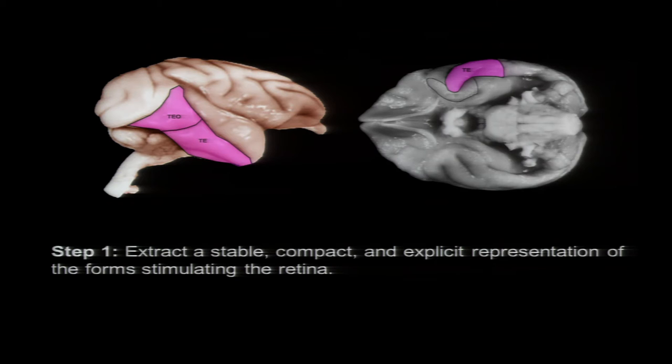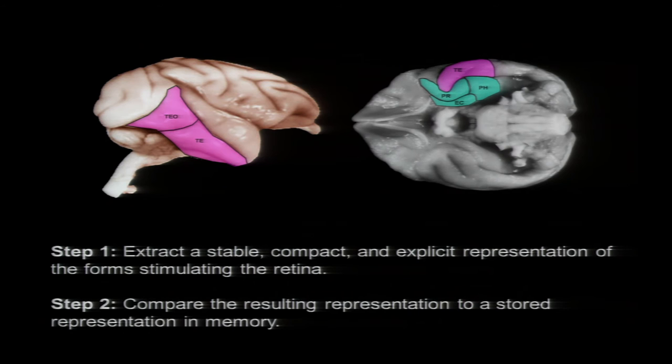So the big question that I'm interested in is how we see. How does the brain create a world of objects in space? And this is a side view of the macaque brain. Conceptually, object recognition involves two steps. First, the brain needs to extract a stable, compact, and explicit representation of the form stimulating the retina. And this is thought to be accomplished by this structure here, the inferior temporal lobe. And then the brain needs to compare the resulting representation to a stored representation in memory. And today I'll be telling you about the mechanisms for this first step.